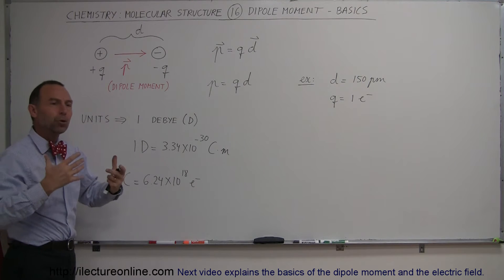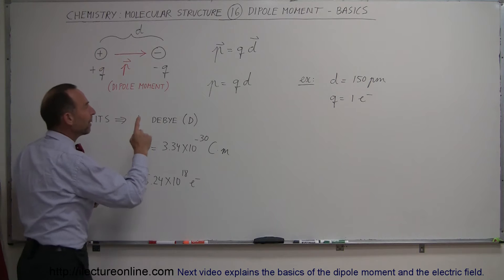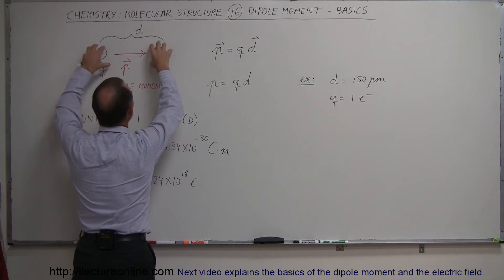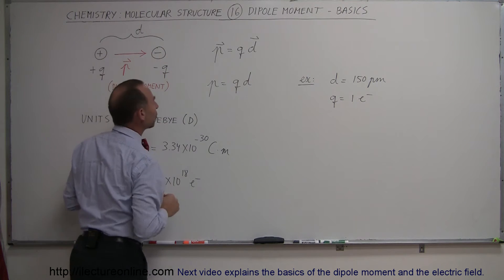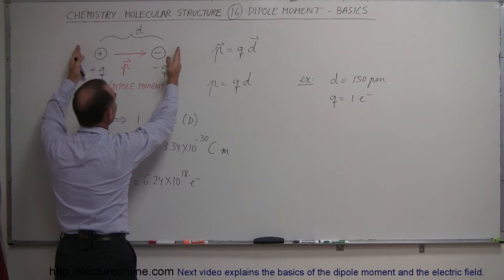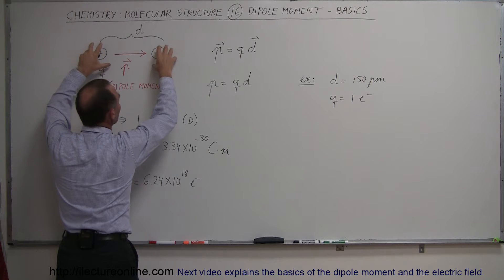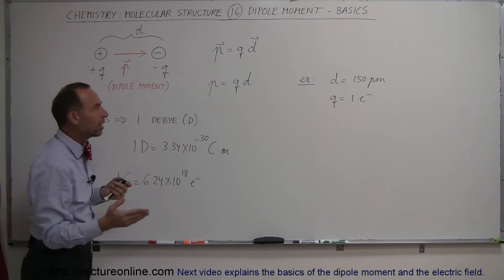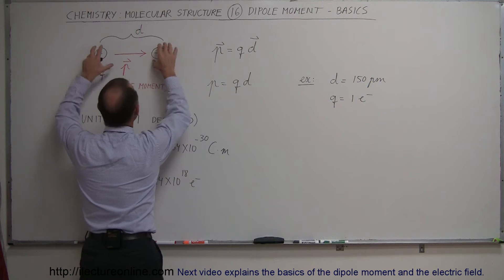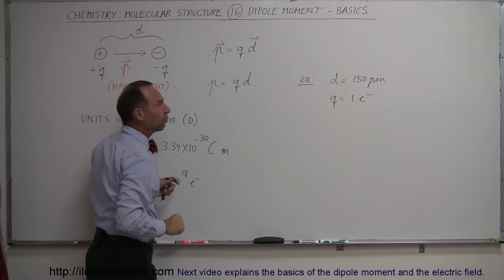The magnitude, the strength of that dipole, how big it is, how strong it is, how effective it is, depends on the charge on either side times the distance between them. So the farther they're apart, the greater the dipole moment. The more charge separated from each other, the greater the dipole moment. It's simply the product between the charge on each side and the distance between them.